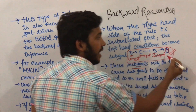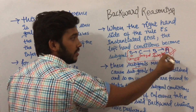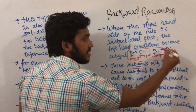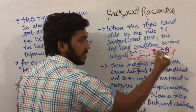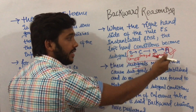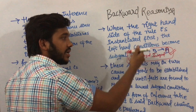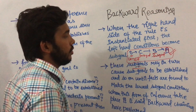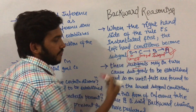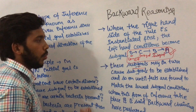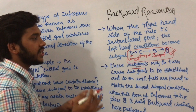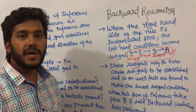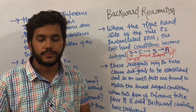In backward reasoning, we begin from the right hand side and the left hand side becomes the sub-goal. These sub-goals in turn cause further sub-goals, and we keep making sub-goals until we reach the lowest sub-goal where the condition is matched. This is what backward reasoning is.